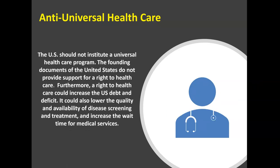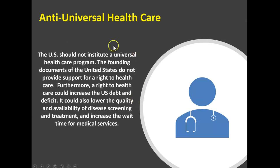Now here's an argument against universal health care: The U.S. should not institute a universal health care program. The founding documents of the United States do not provide support for a right to health care. Furthermore, a right to health care could increase the U.S. debt and deficit. It could also lower the quality and availability of disease screening and treatment, and increase wait times for medical services. In this case, the first statement is again the conclusion, and the rest of the statements serve as the premises.